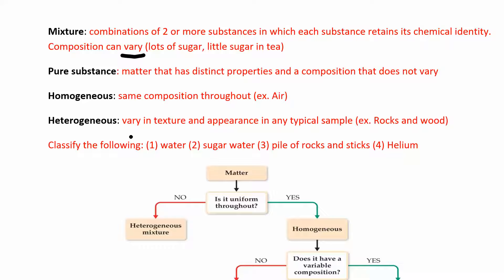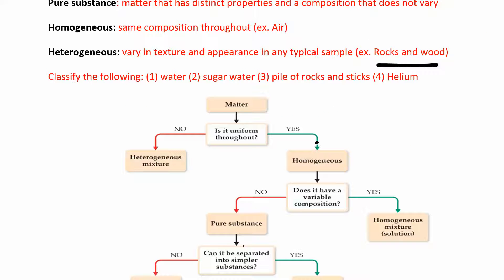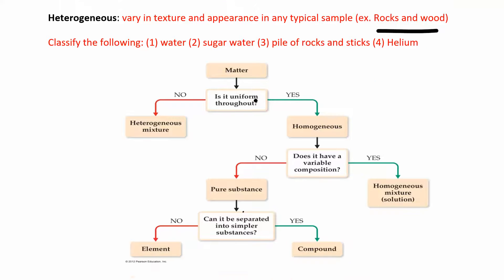Heterogeneous means the composition will vary — it varies in texture and appearance. For example, a pile of rocks and wood: you can clearly distinguish between the rocks and the wood. We can use a flowchart to classify matter. Let's walk through water — is water uniform throughout? Yes, so it's homogeneous, not heterogeneous.